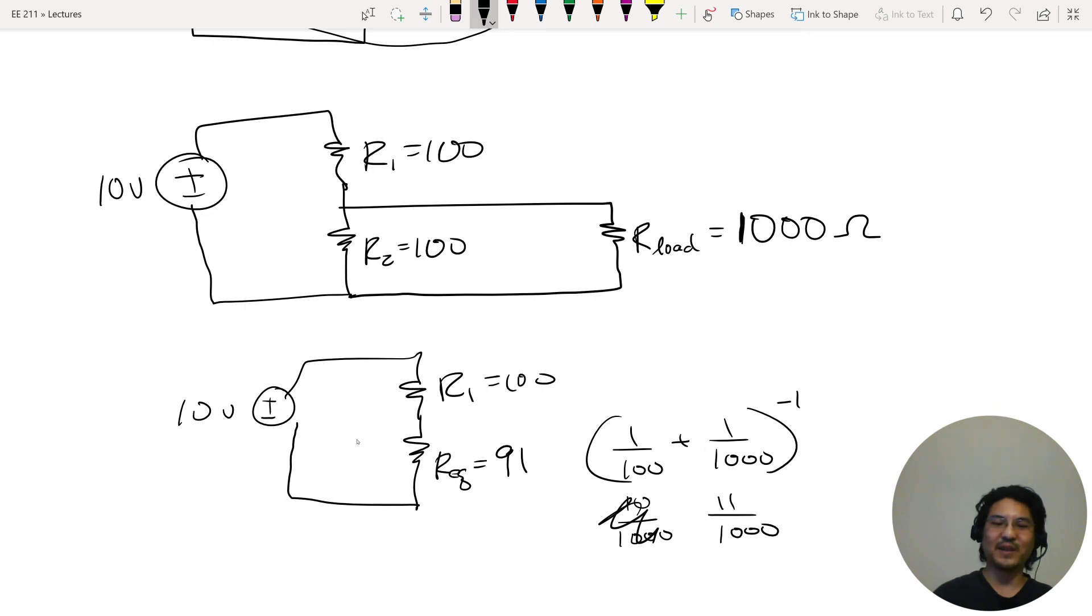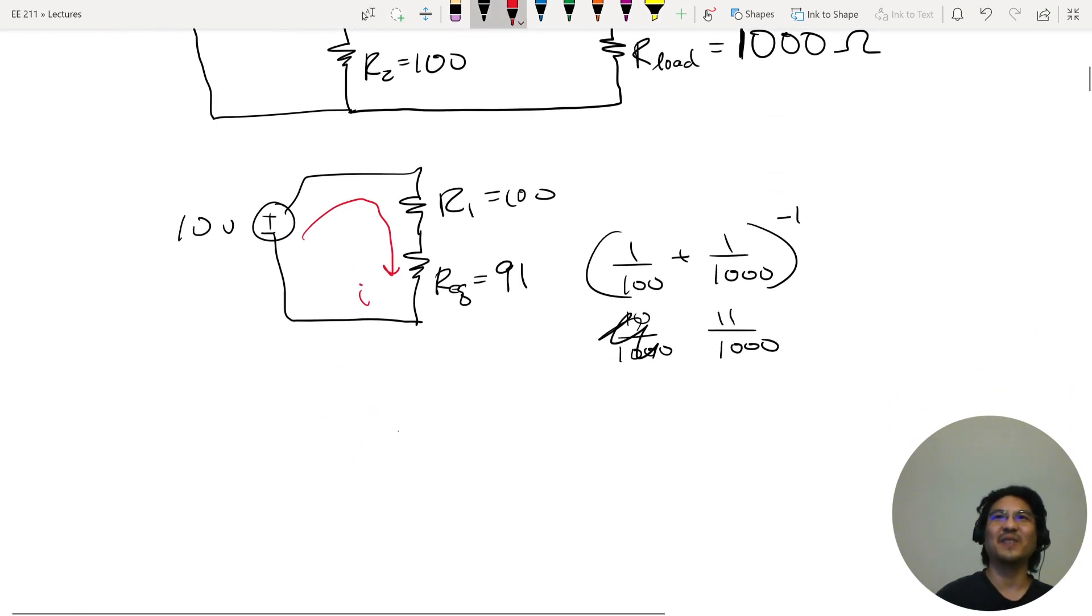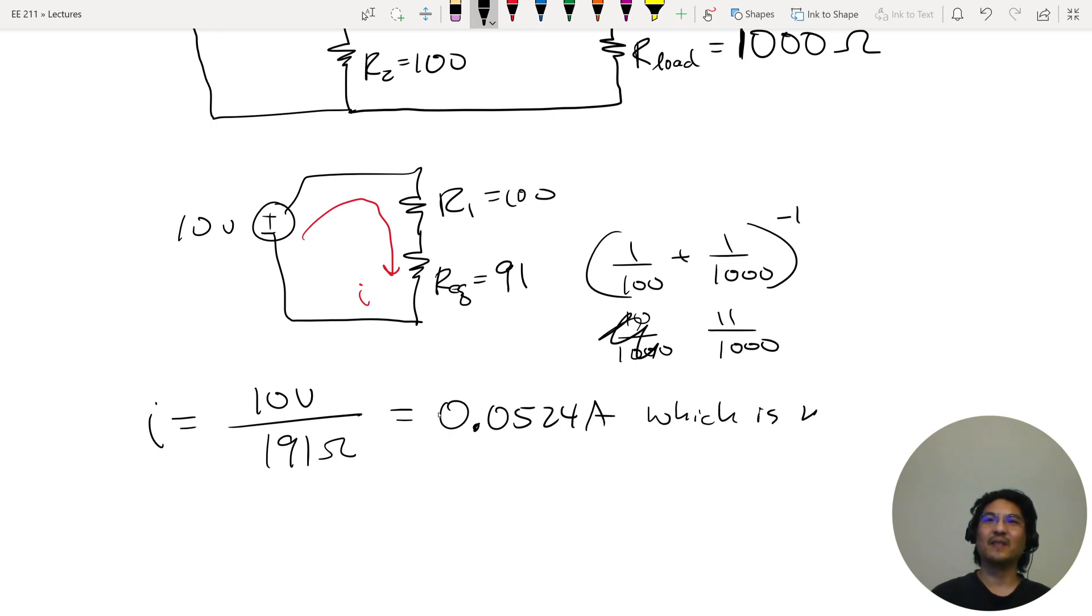So just by connecting the load, look it's different already. Now how much current is here? It used to be 50, now what is it? So the current is V over R which is these two in series, hundred ninety one. Let me punch in the calculator. Five two four. So it used to be 50 milliamps, now we're drawing 52 milliamps. So we're drawing more current.